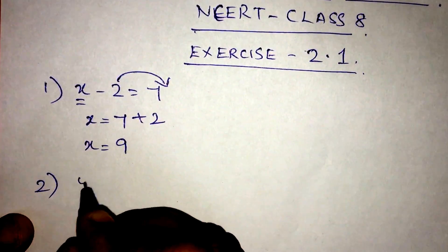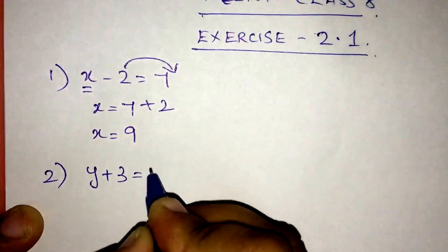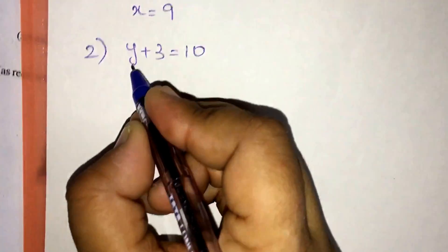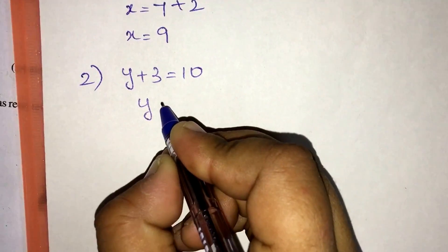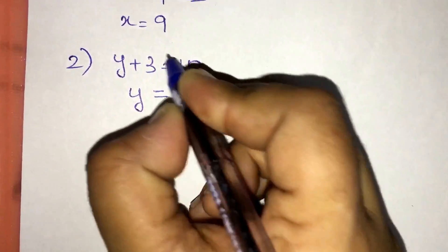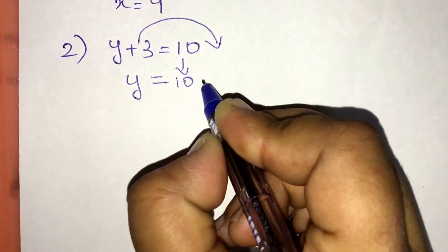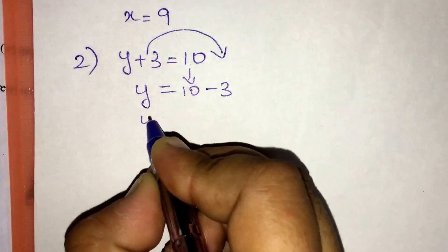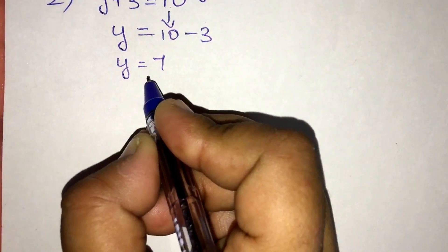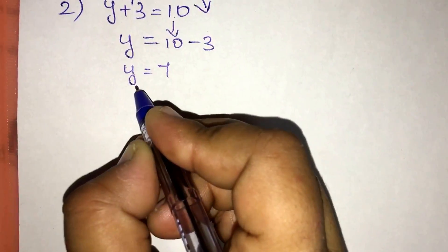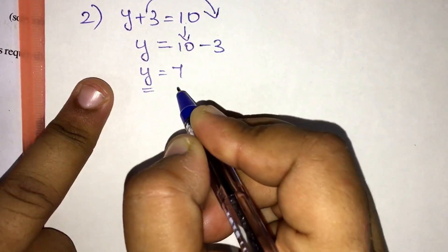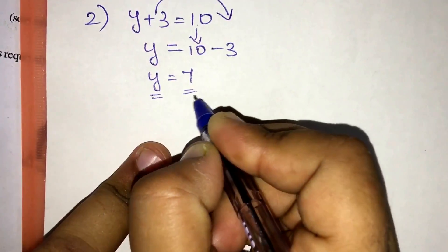Question number 2: y plus 3 is equal to 10. The variable y is on the left hand side. The 3 goes to the other side, so it is 10 minus 3, and the y value is 7. That is how we find the value of the variable — always keep the variable on the left side and take all the values to the right side.